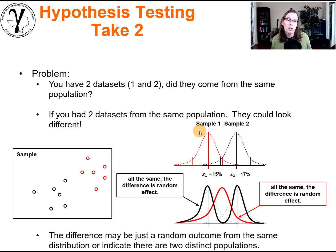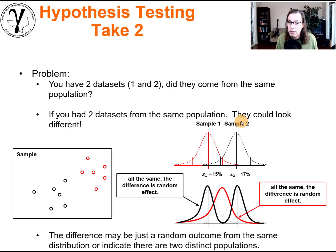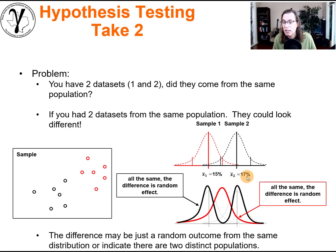When we pull those data together and build a distribution, we get sample one and sample two — and they look different. The question is: are they actually different? The sample statistics are different — a sample mean of 15 for the red sample and a sample mean of 17 for the black sample.